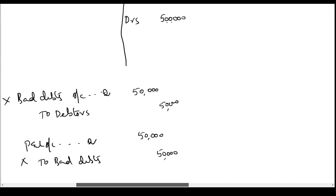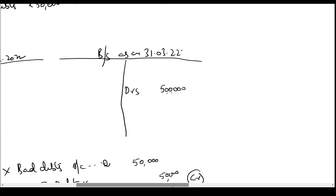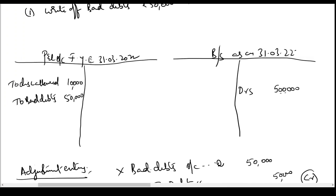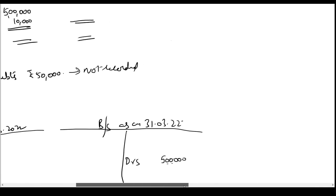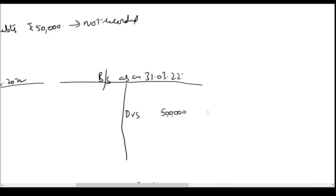Next, the debtors account. This entry asks you to credit the debtor account, whereas in the trial balance the debtor account was showing a debit balance of 5 lakh. So we have to reduce the amount — because this entry asks you to credit the account, we write: less bad debts 50,000. In the outer column I will write 4,50,000.